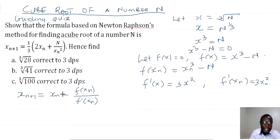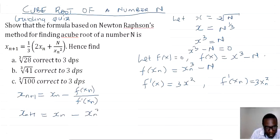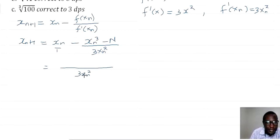We substitute into the Newton-Raphson formula. We shall have x(n+1) equal to xn minus f(xn), which is xn³ - N, everything divided by 3xn². Now we simplify by finding the LCM, which is 3xn².